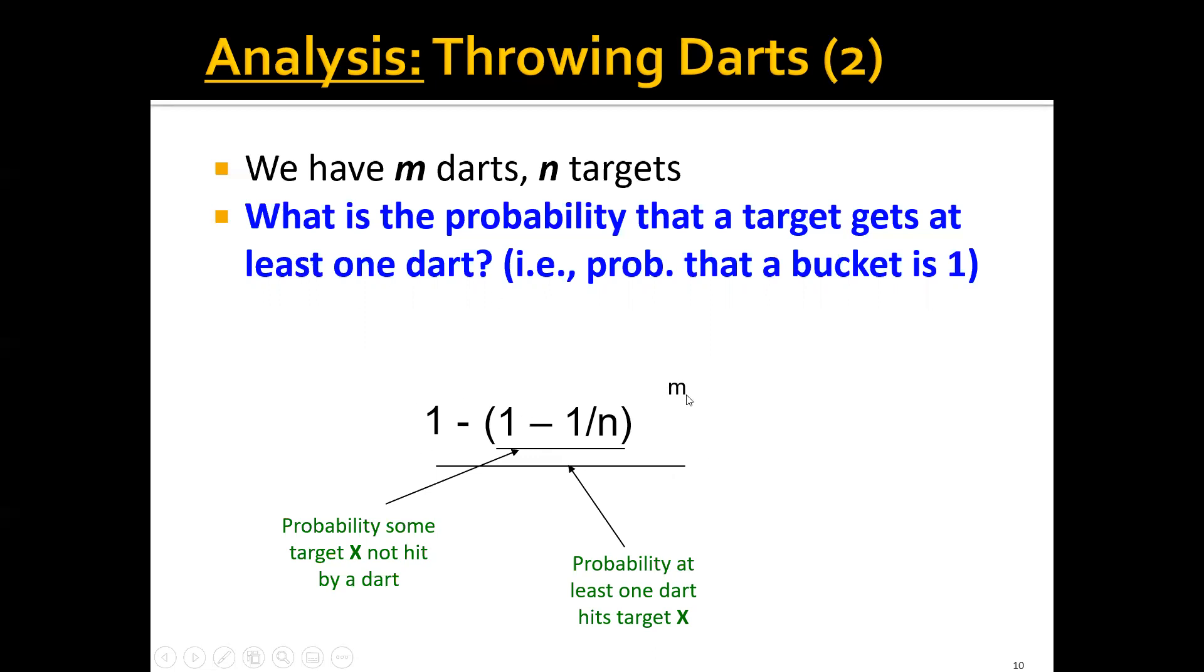We can actually rewrite this m as n times n divided by n. After doing this, our calculus tells us that this whole term, (1 - 1/n)^n, is actually equal to 1/e, where e is the base of the logarithm. This is equal to 1/e if n goes to infinity. Since usually in our problem we have a lot of bits in the bit array, we can say that this whole term can be very well approximated by 1 - e^(-m/n).